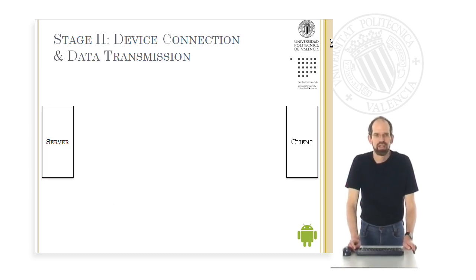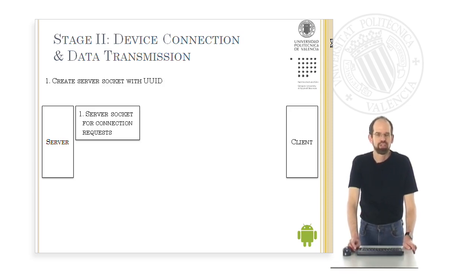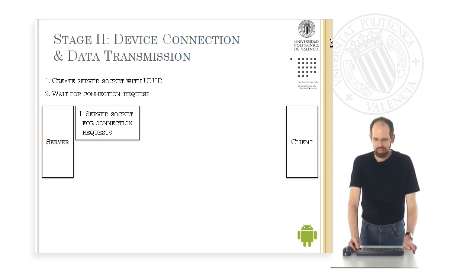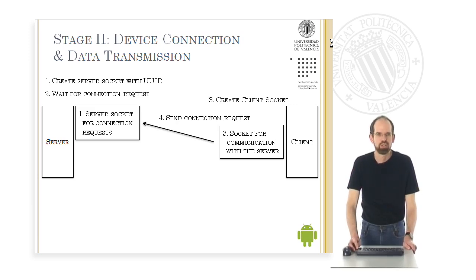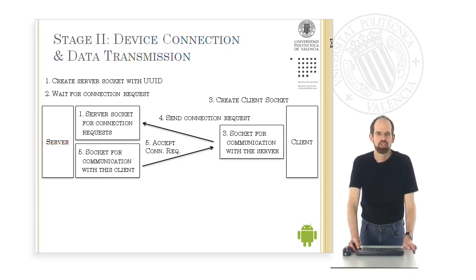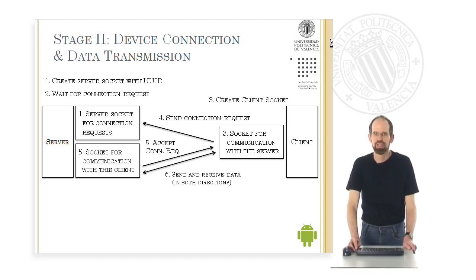Connection establishment is based on a client-server model. One of the devices acts as a server and the other as a client. The server first creates a server socket with a UUID — a Universal Unique Identifier — which waits for incoming connection requests. Then the client creates a client socket and sends a connection request to the server. The server accepts this request and generates a second socket used exclusively for communication with this client, and an accept message goes back to the client. Afterwards, the connection between these two sockets has been established and both sides can send and receive data using their respective socket.